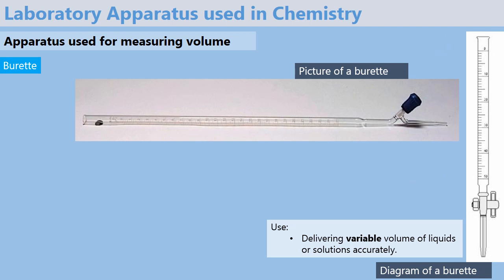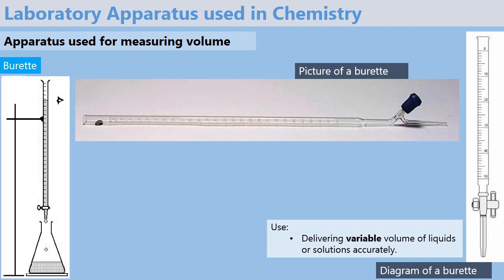Let us have another picture to show us how this happens exactly. Look at the left hand side of your screen and you see a burette in use. You can see the level of liquid, the tap is open, and the liquid is delivered into this conical flask. When you get to the lab, you're going to use it practically and it's going to be very easy to understand.